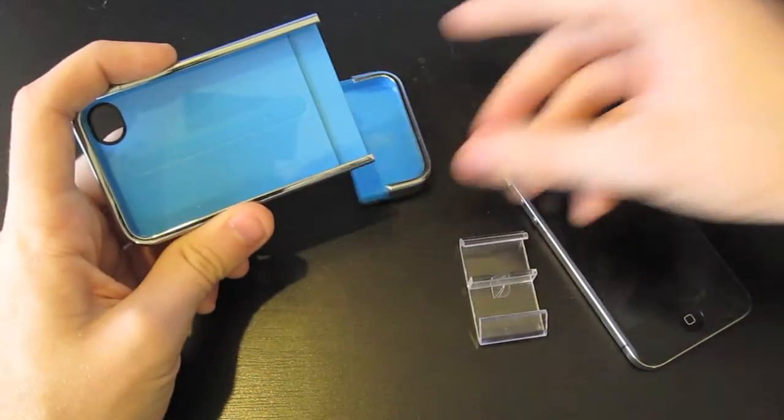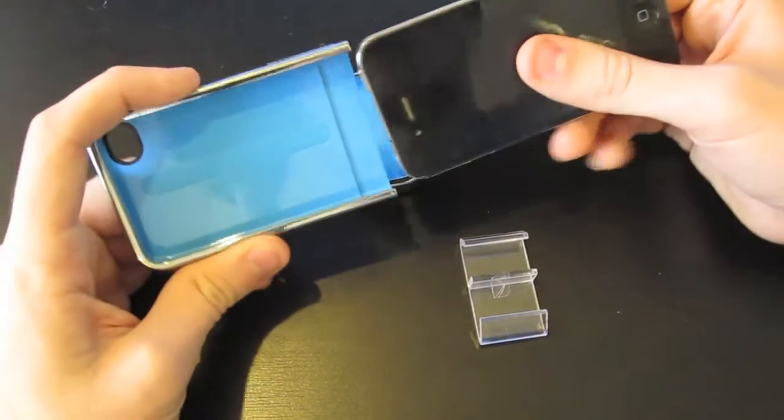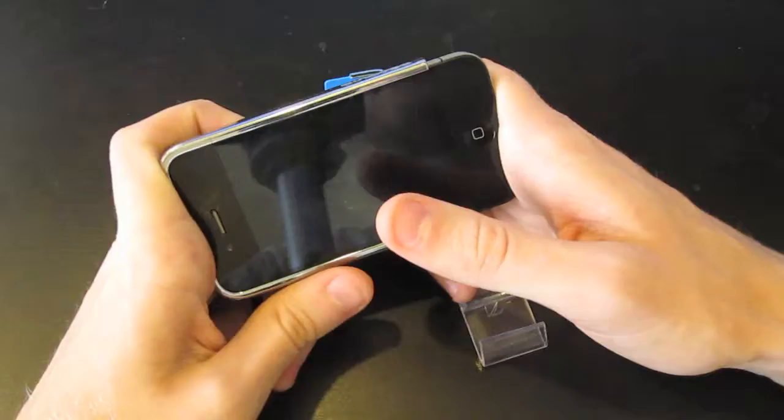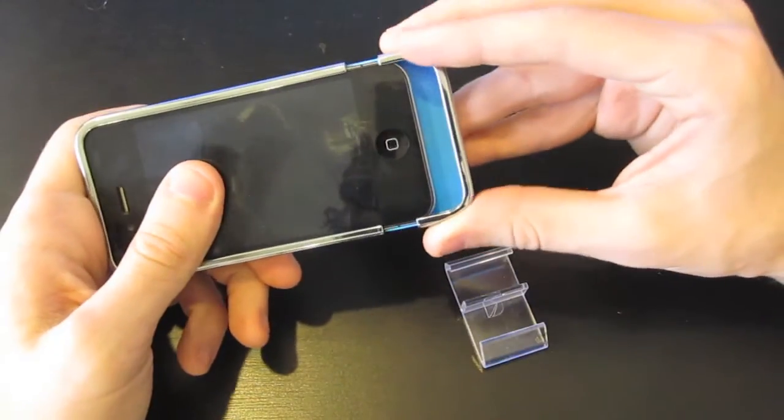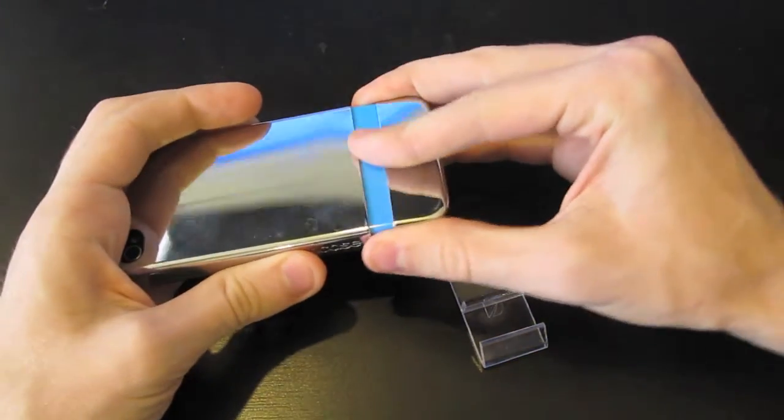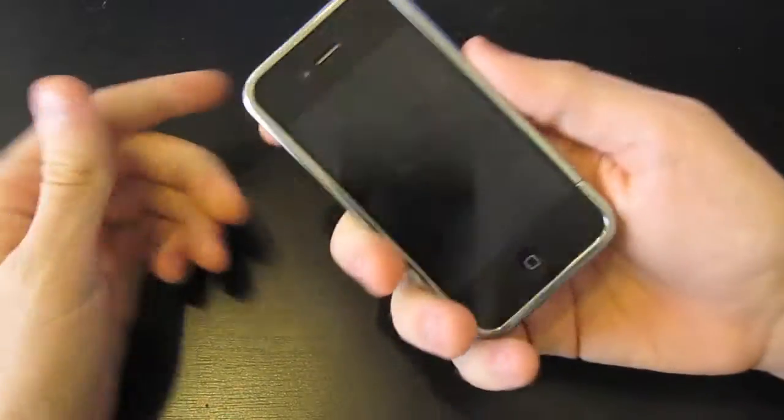But it just slides off there. And you just take your iPhone in. And you just slide it in like that. And pop that out on the bottom. Simple as that. And there you go. The case is on.